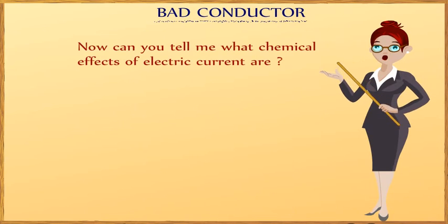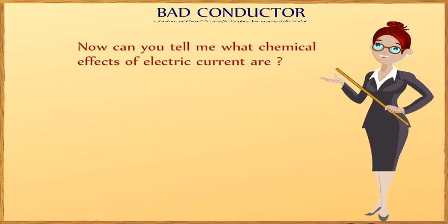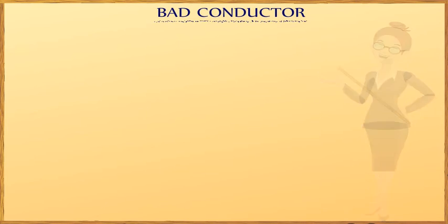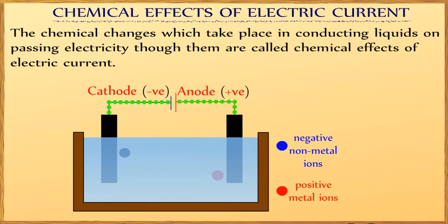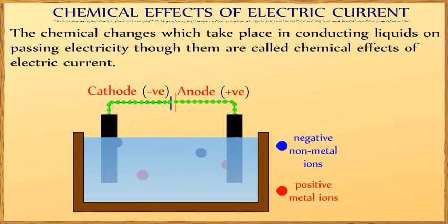Now, can you tell me what the chemical effects of electric current are? The chemical changes which take place in conducting liquids on passing electricity through them are called chemical effects of electric current.